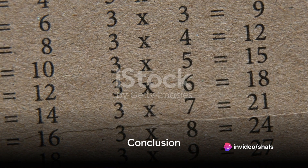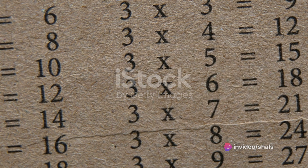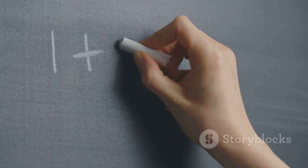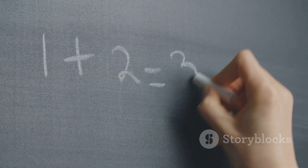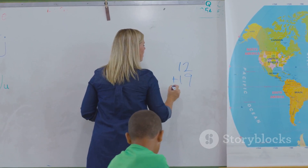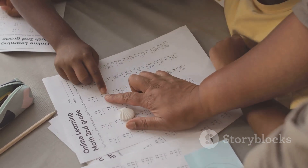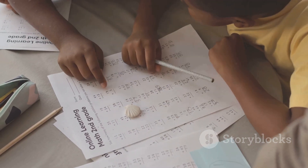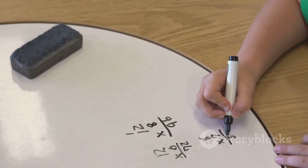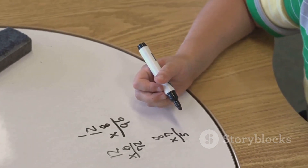In conclusion, the six times table is all about patterns and repetition. It's a simple process of adding six more each time you progress. And remember, practice makes perfect. So don't be afraid to revisit these steps and familiarize yourself with the six times table — it's a vital tool that will serve you well in many areas of life.